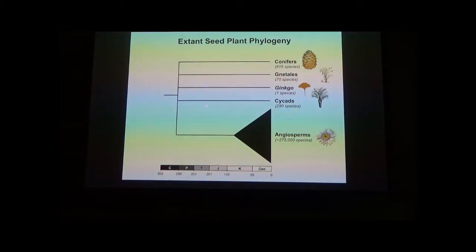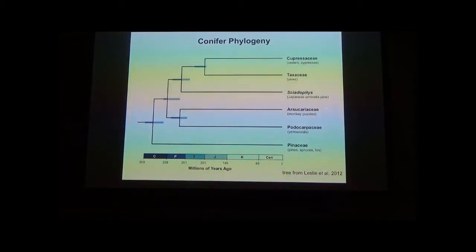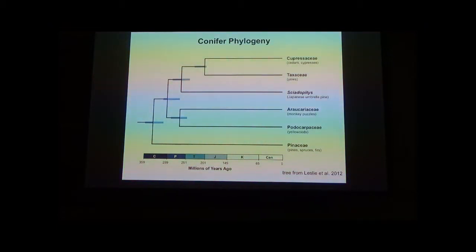Although the relationships among all these groups are poorly known, the phylogenetic relationships among conifers are pretty well known. This tree shows the relationships among conifer groups and their approximate divergence dates based on molecular data and fossils. We have pines, the podocarps, the monkey puzzles—primarily southern hemisphere and tropical conifers—the monotypic Japanese umbrella pine, and then the yews, which surprisingly are closely related to the cedars and cypresses. These relationships weren't resolvable until the advent of molecular systematics.